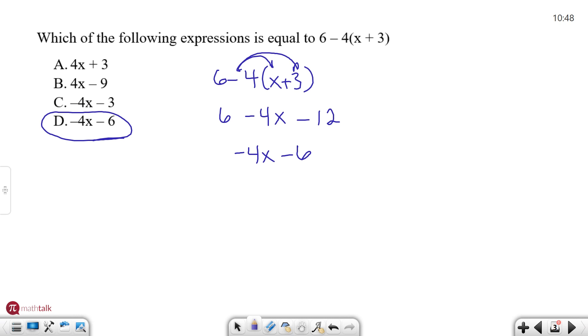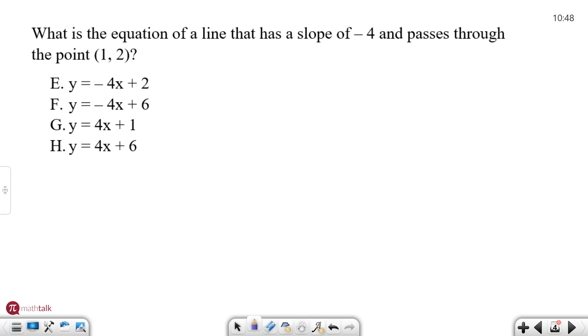Alright, let's look at one more example. This time we have an equation. We're asked what is the equation of a line that has a slope of -4 and passes through the point (1, 2). So if you see your options they're all in slope intercept form which is nice because it allows us to figure out things a little bit easier and we need to figure out basically what the y-intercept is or that b value.